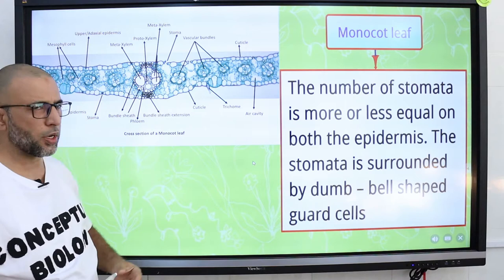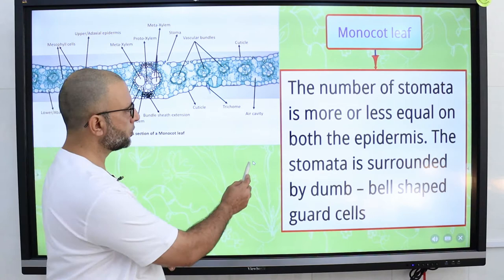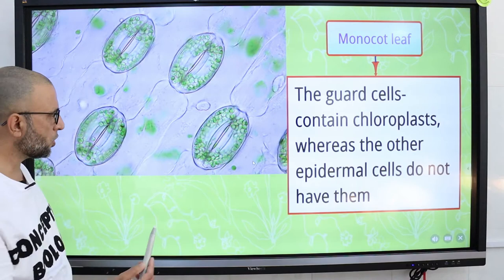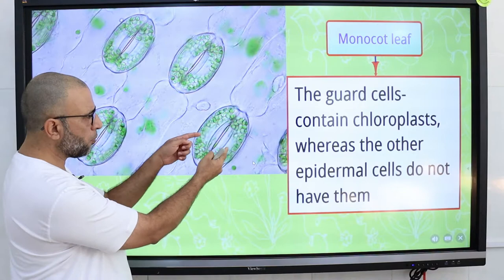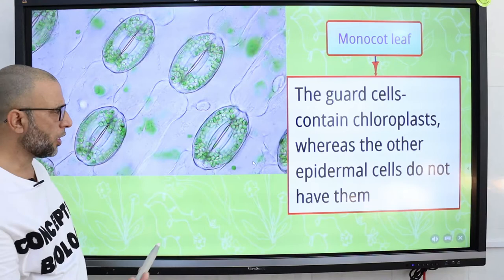Stomata are little mouths for the exchange of gases. They are present more or less equal in number in the upper epidermis as well as in the lower epidermis. The stomata are surrounded by dumbbell-shaped guard cells. These guard cells contain chloroplasts and are photosynthetic in function, while epidermal cells are transparent and do not have chloroplasts. Between the guard cells there is a single opening called a stoma — stoma is singular and stomata is plural.